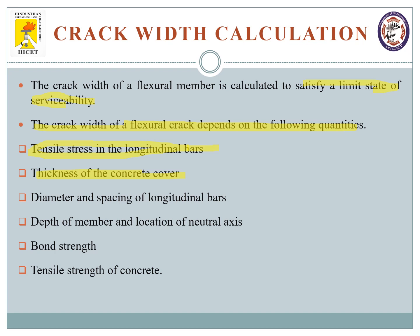diameter and spacing of the longitudinal bars, depth of the member and location of the neutral axis, bond strength and tensile strength of the concrete. So these factors actually contribute to the crack that is being developed in a structure.